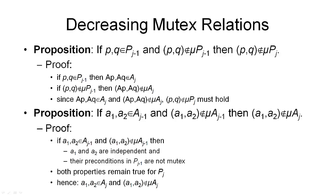Now that we understand what mutex relations are and how to compute them, let's see how mutex relations propagate through the planning graph. The first proposition says that if a pair (P, Q) is in proposition layer P_{J-1} and they are not mutually exclusive in that layer, then this same pair will also not be mutually exclusive in the next proposition layer. This means once a pair of propositions has become non-mutex, it can never become mutex again in a later layer. So mutex relations are in some sense decreasing the further along the planning graph we go.